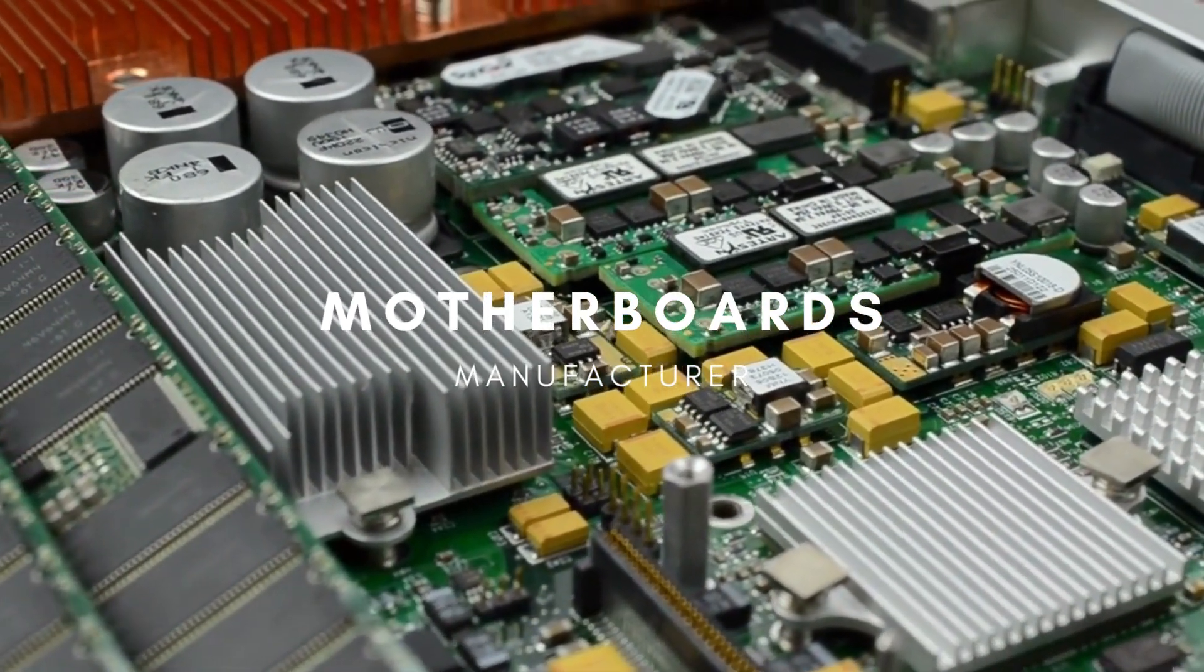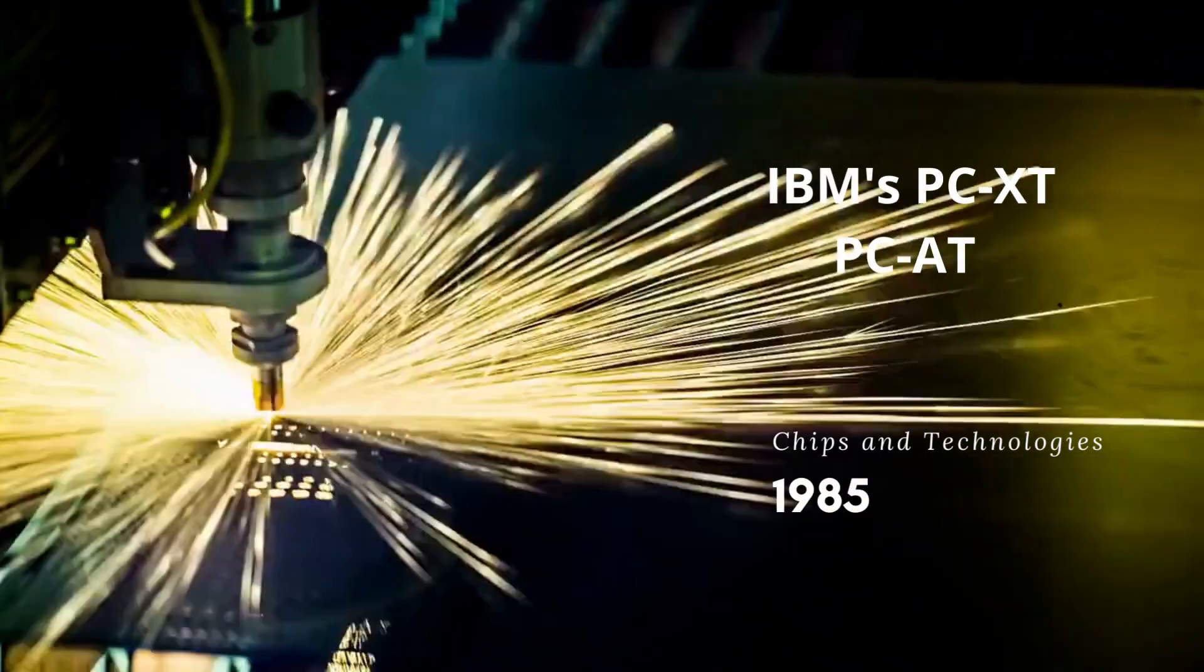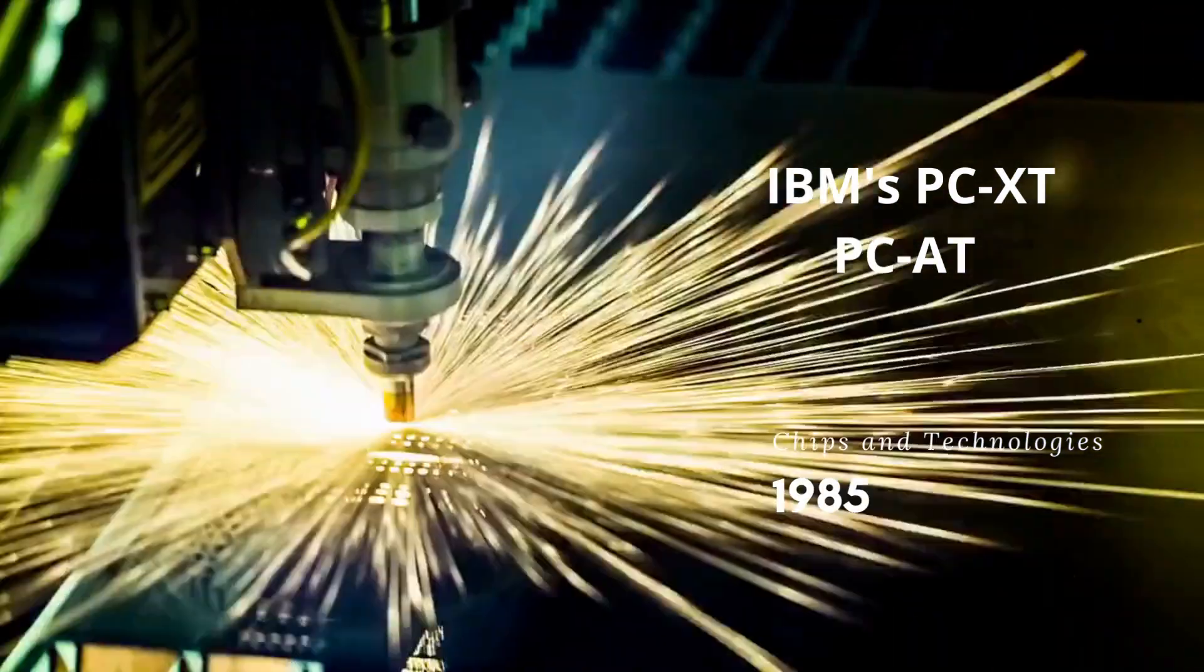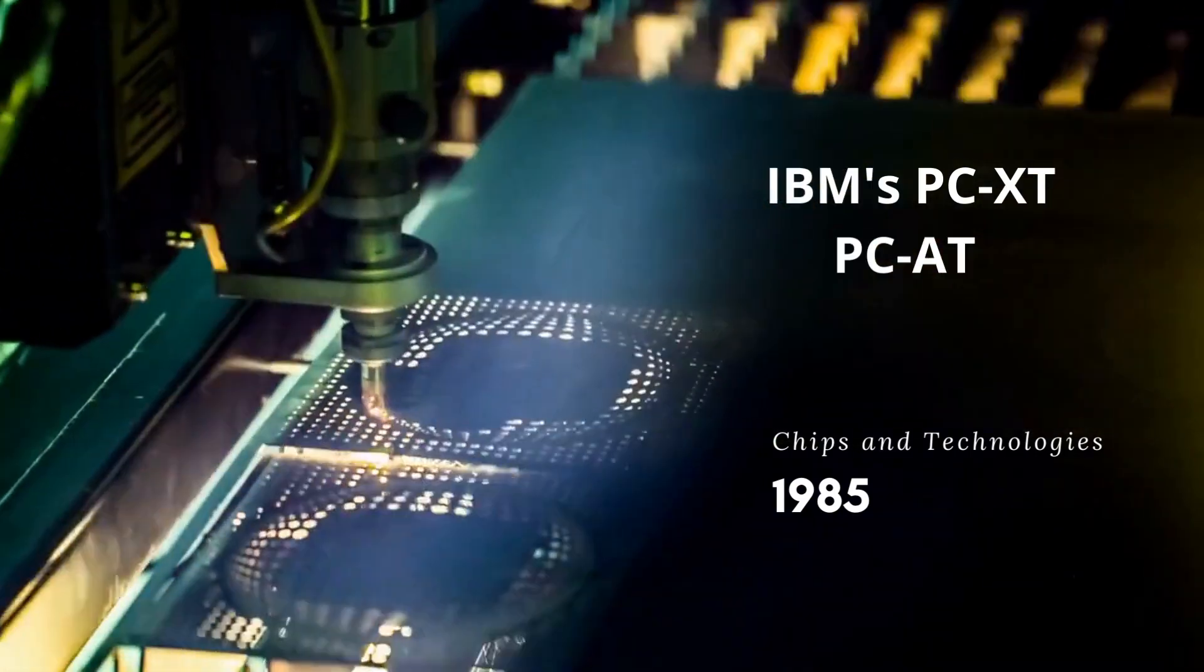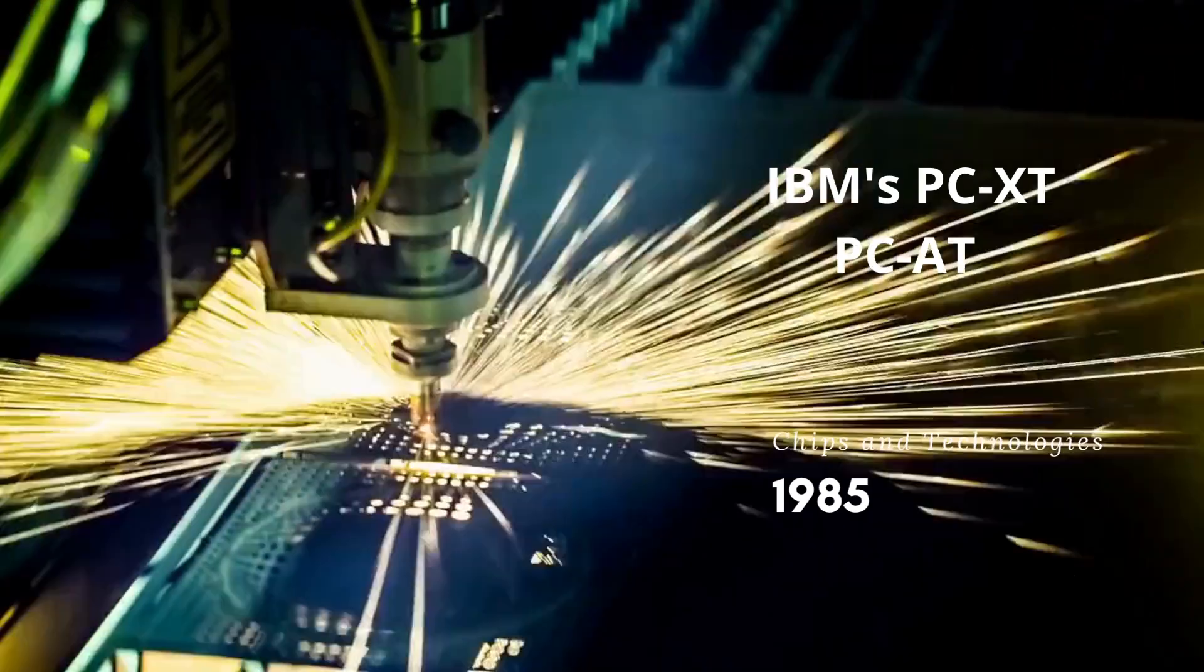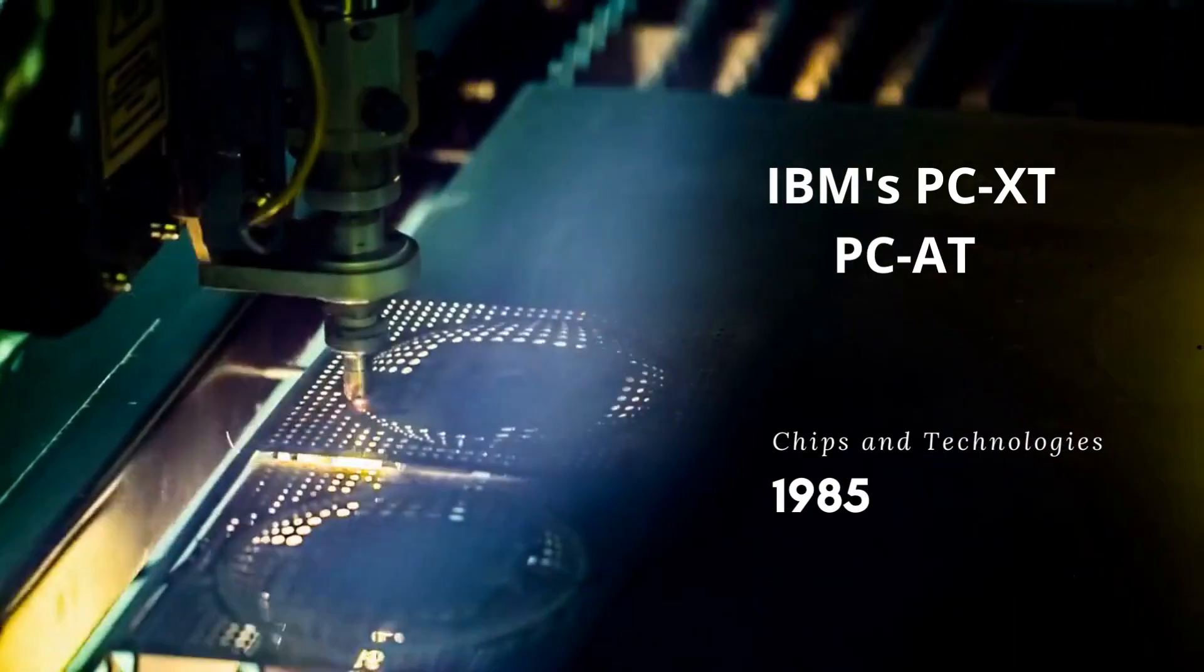After he developed a five-chip set, he co-founded Chips and Technologies in 1985. The company developed System Logic chip set for IBM's PCXT and the PCAT. The company earned $12 million in its first four months. After 22 months, the company went public.